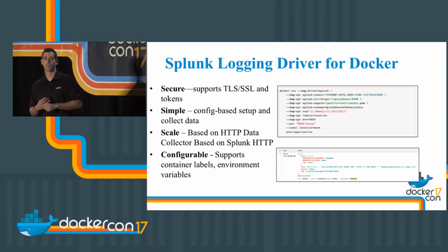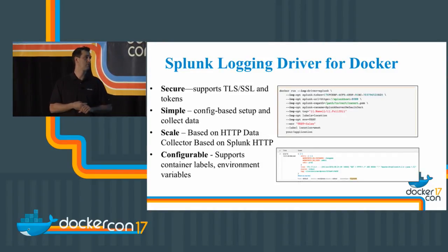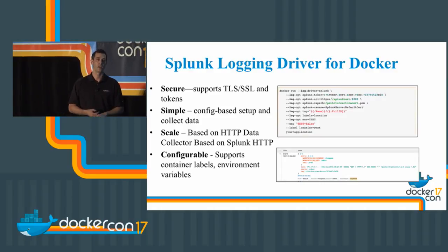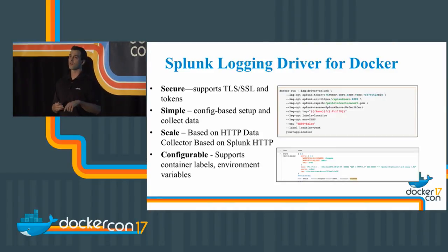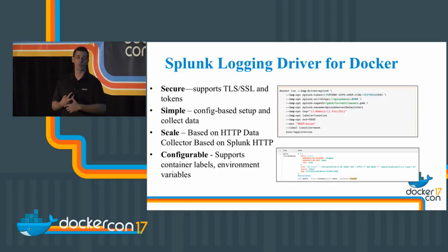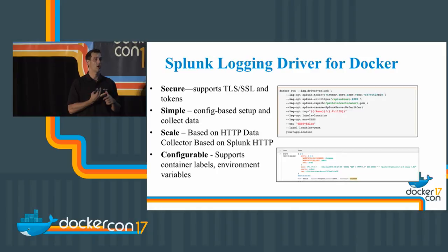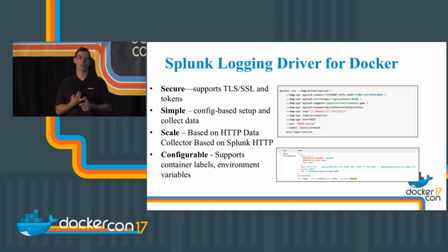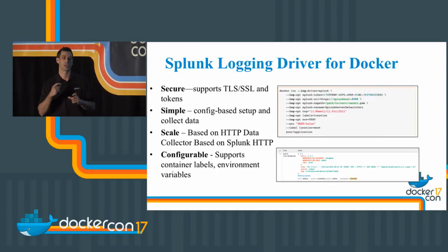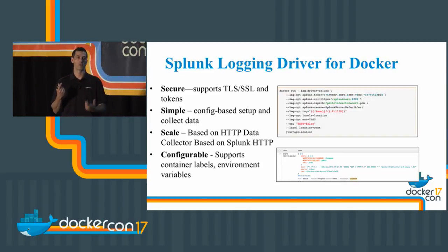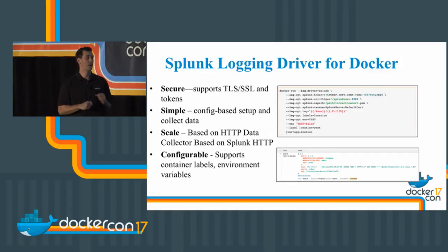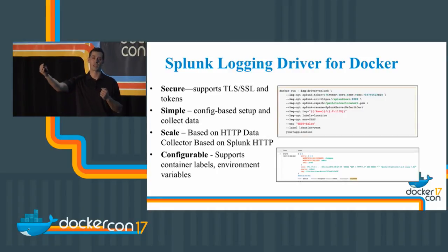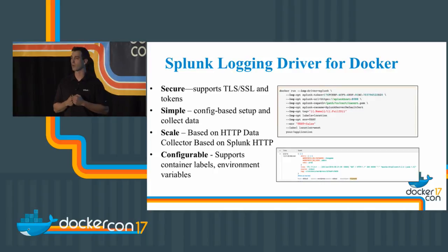It scales — we scale pretty much indefinitely, greater than 60,000 events per second per node, and that can scale as large as you want. This was introduced in Docker 1.10. In 1.13 we added performance enhancements and the ability for the Docker image not to block if it can't connect to the endpoint — now a configuration parameter. In 1.10 the container would not run if it couldn't connect to the endpoint; in 1.13 you can configure that however you want. We've also added buffering capability within the logging driver.